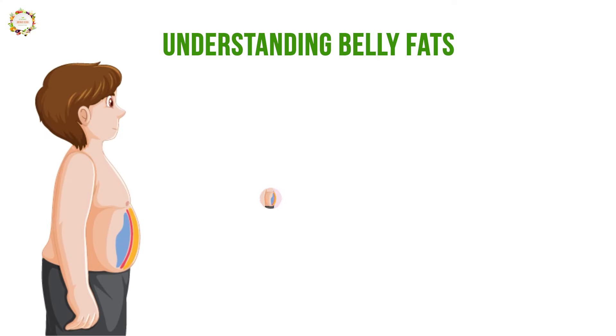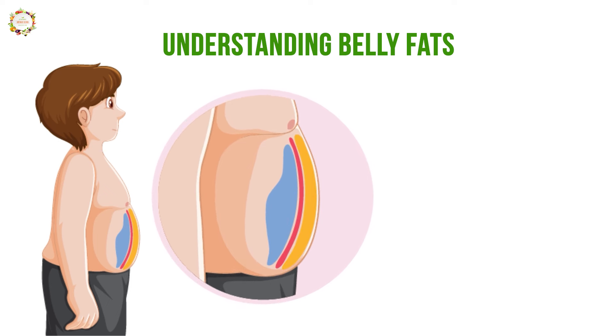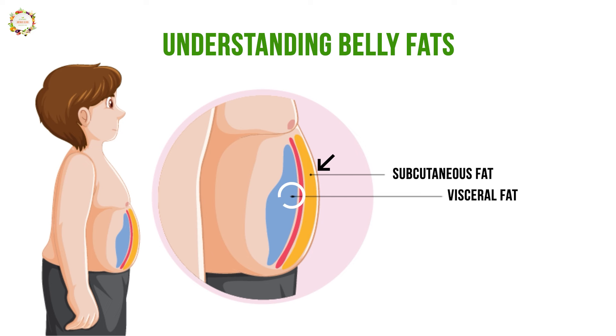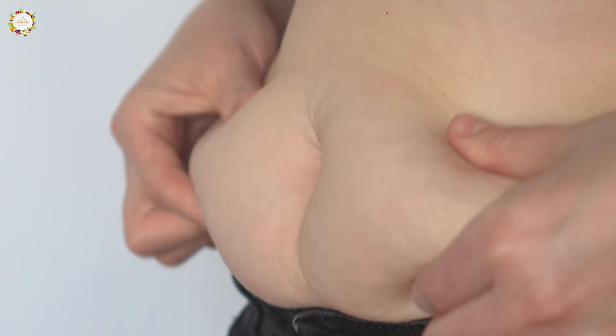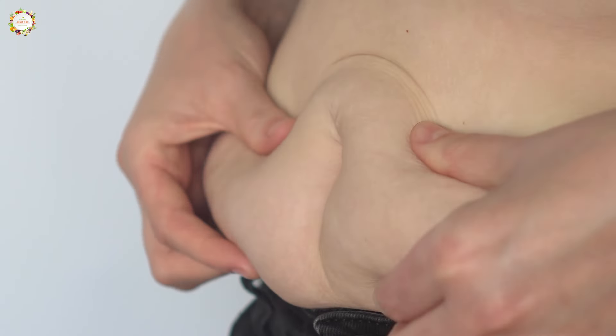We should understand what belly fat is. There are two types of belly fat. One is the superficial layer, the subcutaneous fat — the fat which is right below our skin. The second is called visceral fat, the fat that surrounds our vital organs like our liver. This kind of fat is really dangerous for our heart and is responsible for metabolic problems like cardiovascular problems, type 2 diabetes, and fatty liver disease.